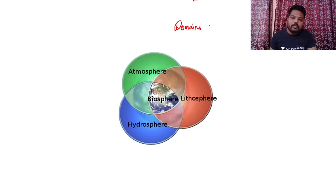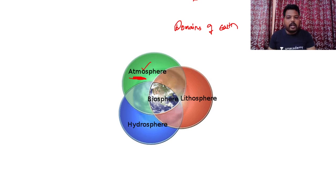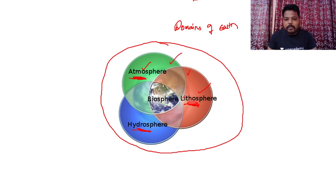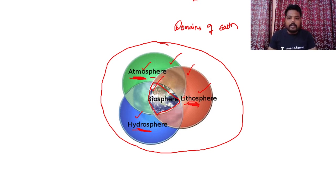The next chapter is 'Domains of Earth.' The earth's surface has three major domains: atmosphere — the most important life-giving thing; lithosphere — the topmost solid crust; and hydrosphere — different oceans and sea bodies. The interaction of atmosphere with lithosphere and hydrosphere gives us a combined phenomenon called the biosphere. Please remember: interaction between these three gives us biosphere.